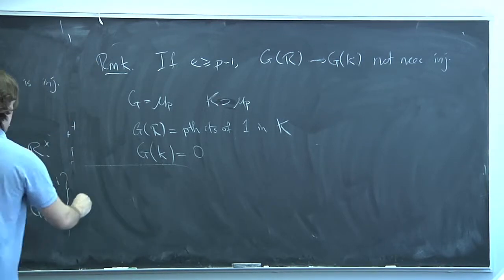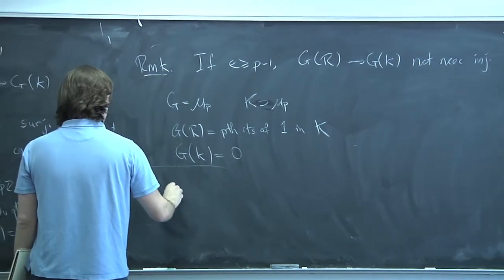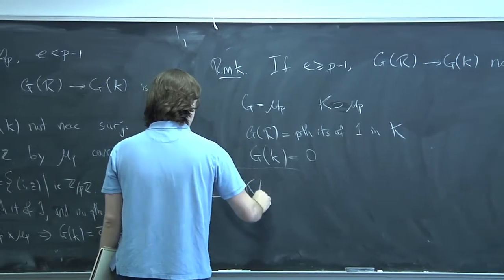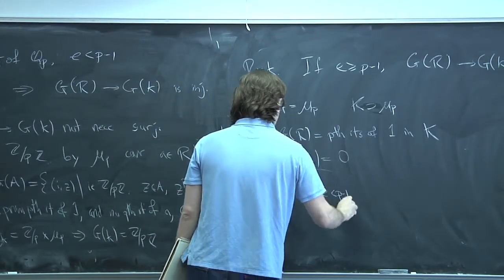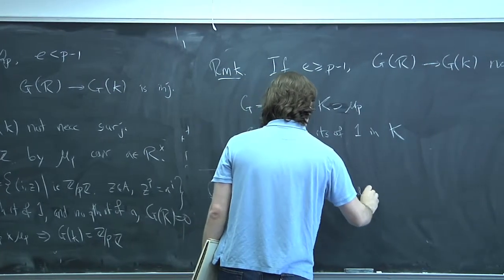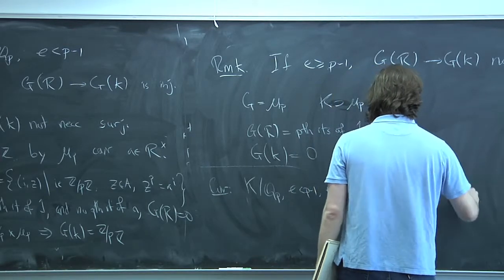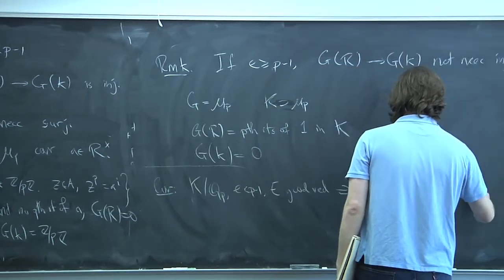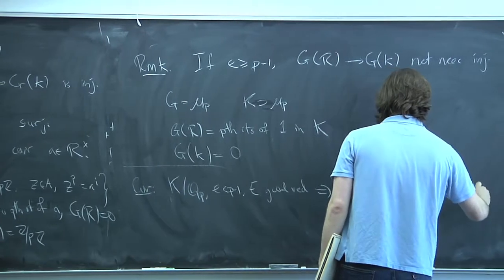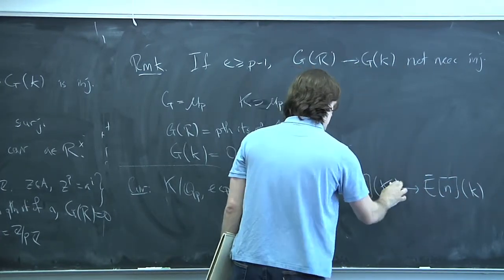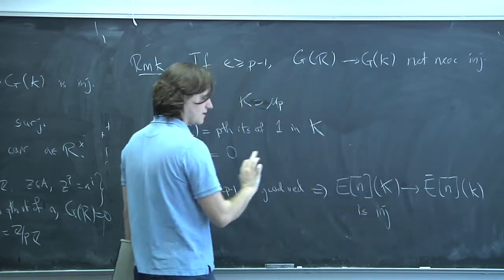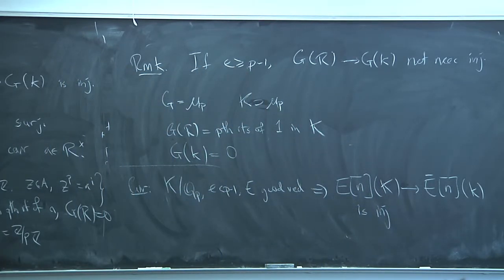Corollary for elliptic curves: if K is over Q_p and e < p - 1, and E has good reduction, then the reduction map on N-torsion on K-points is injective. It's important that it's K there, not K-bar — this is sensitive to the ramification index of K.